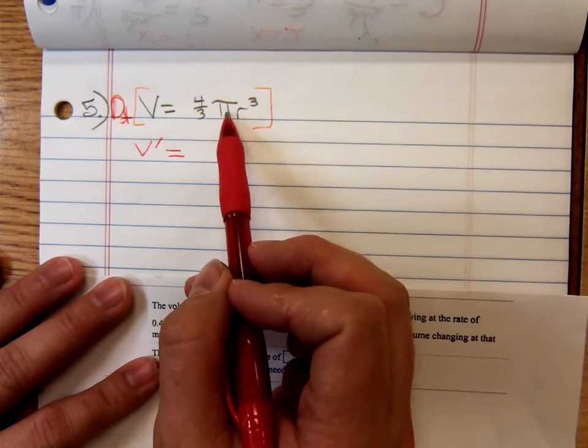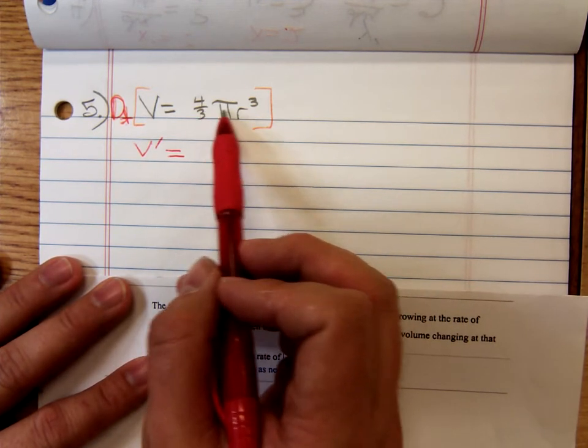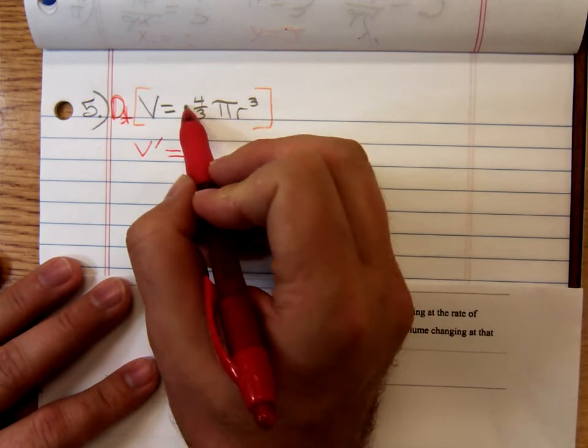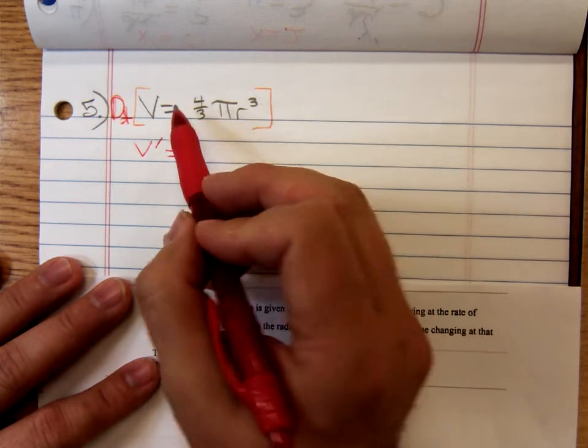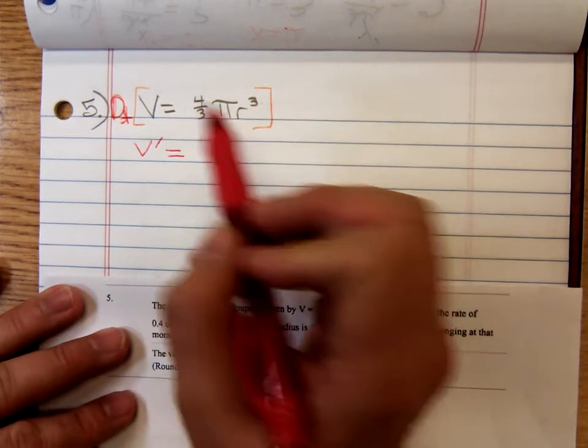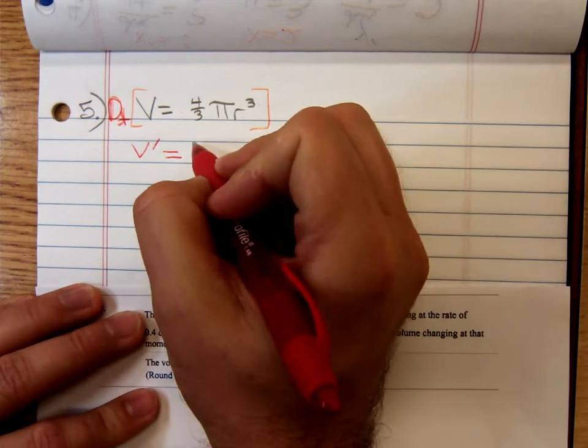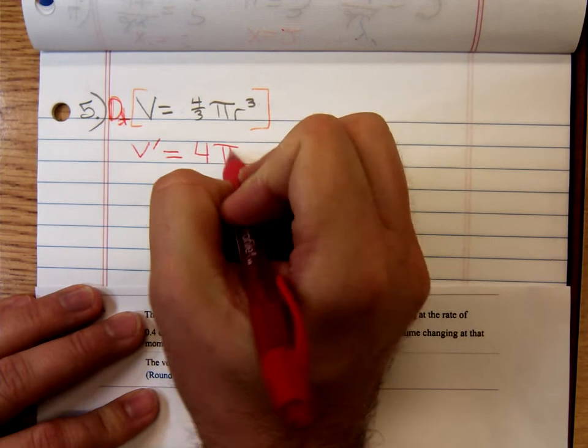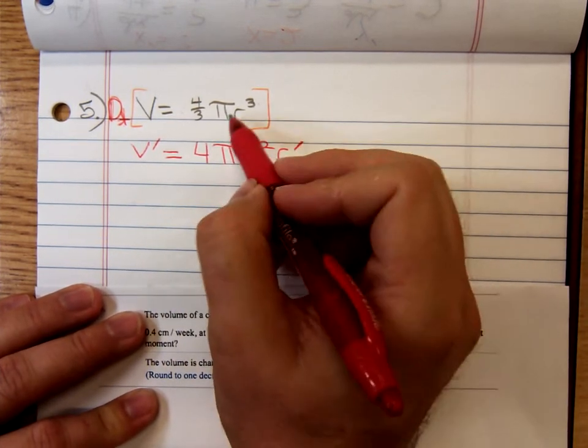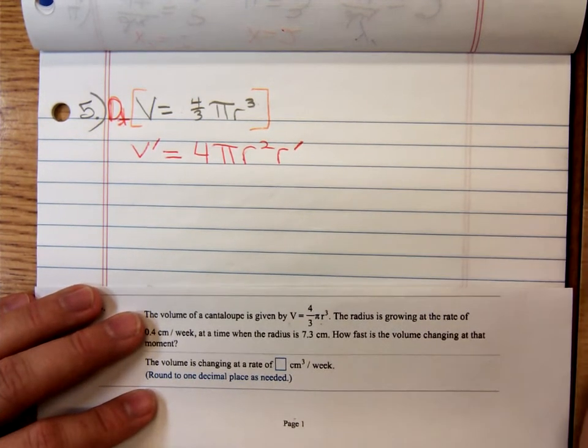On the right hand side, don't let that pi shock you. Pi is a number. You have a number times r cubed. We know how to differentiate that. You pick the 3 up, you move it down. 3 times 4 thirds. What happens when you take 3 times 4 thirds? The 3's are going to cancel and you'll just have a 4 pi r squared, but then you need to multiply by the derivative of that radius function in terms of t, which is r prime.